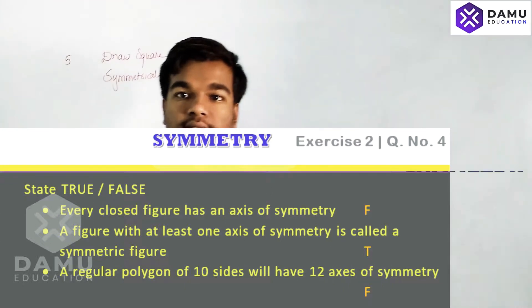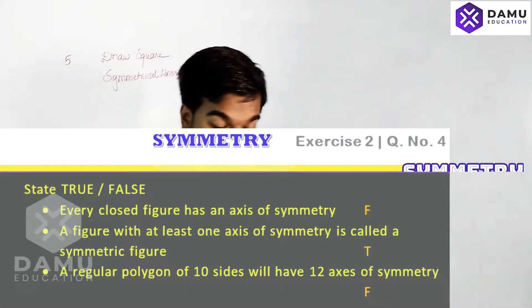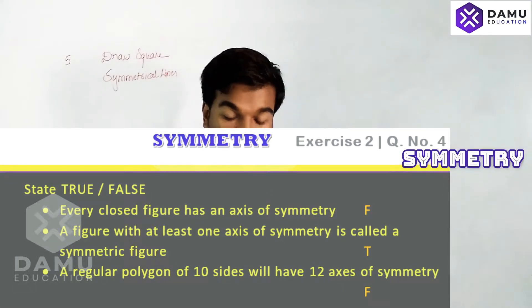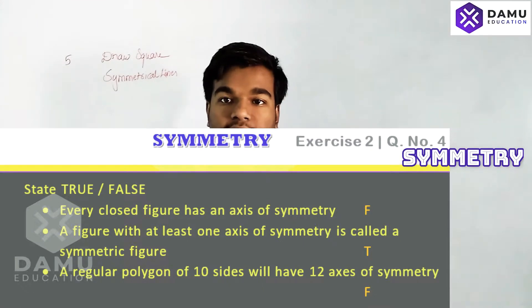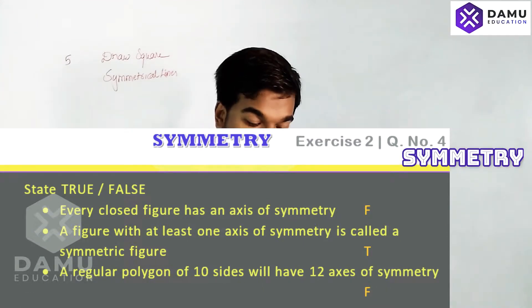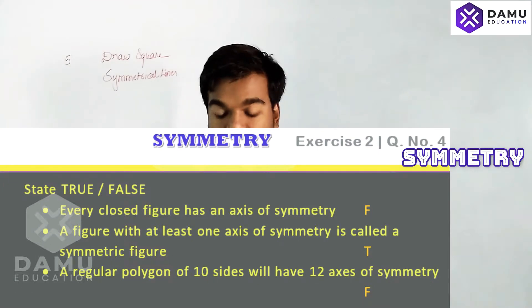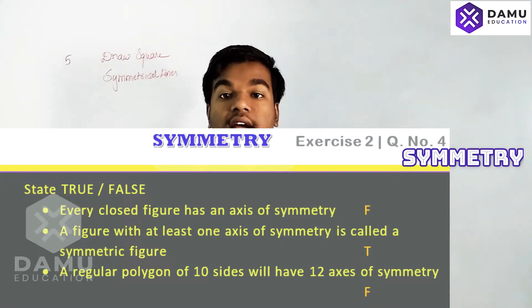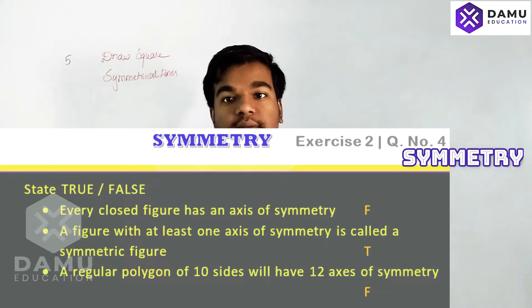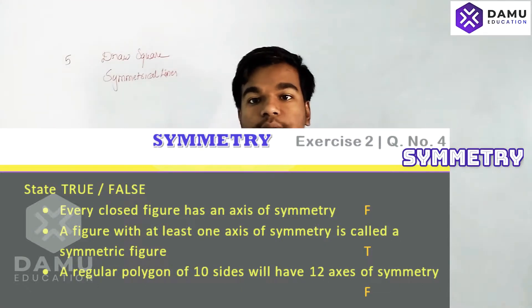The fourth question says: state whether the following statements are true or false. The first statement is: every closed figure has an axis of symmetry. Not all closed figures will have an axis of symmetry.